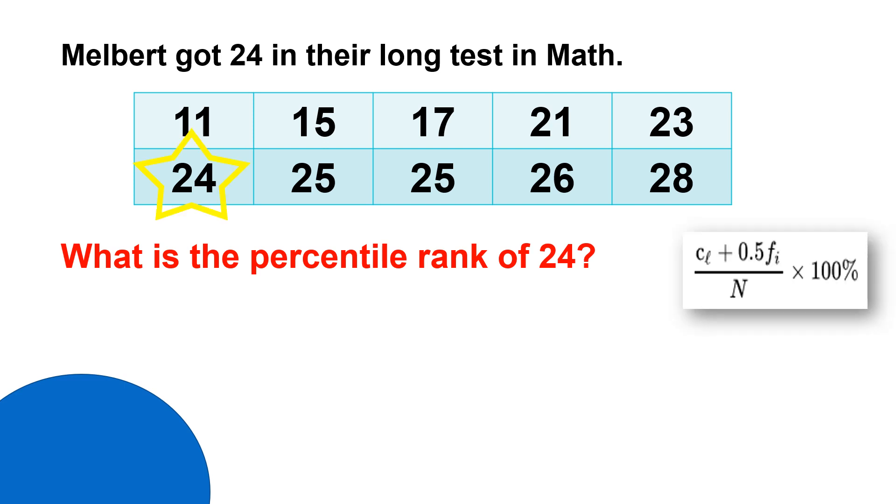In the formula, C_L, let's count first the scores below 24. So you have 11, 15, 17, 21, and then 23. So that is 5.